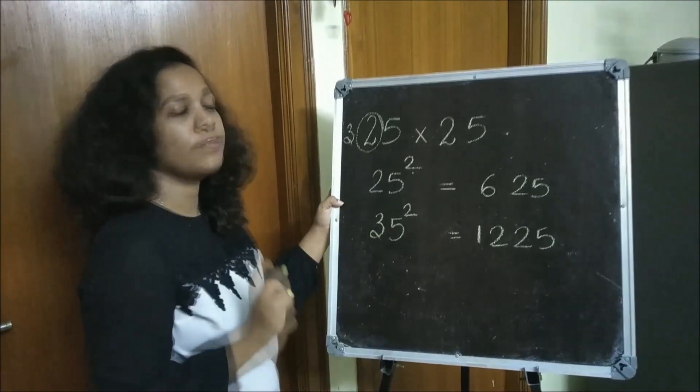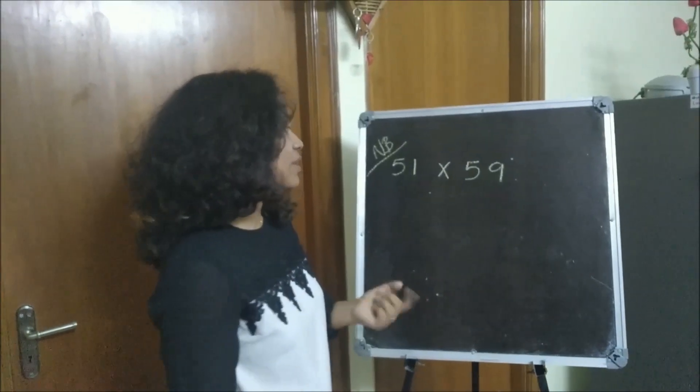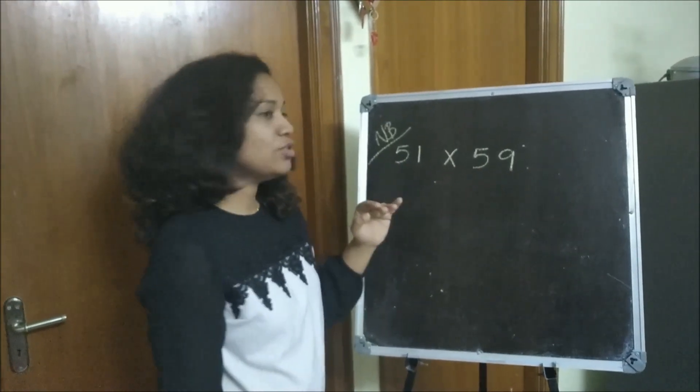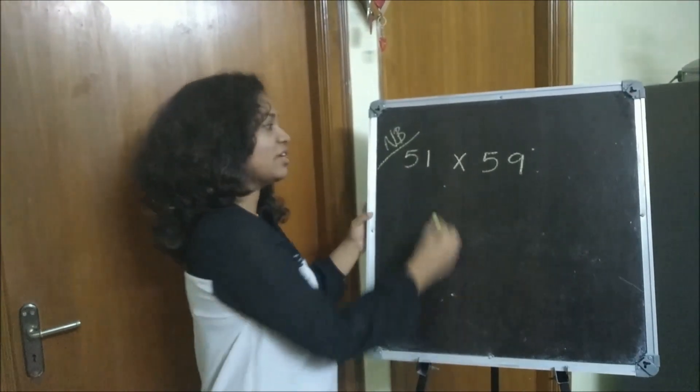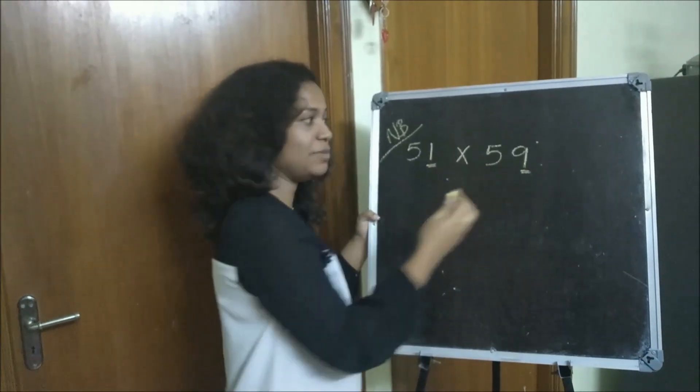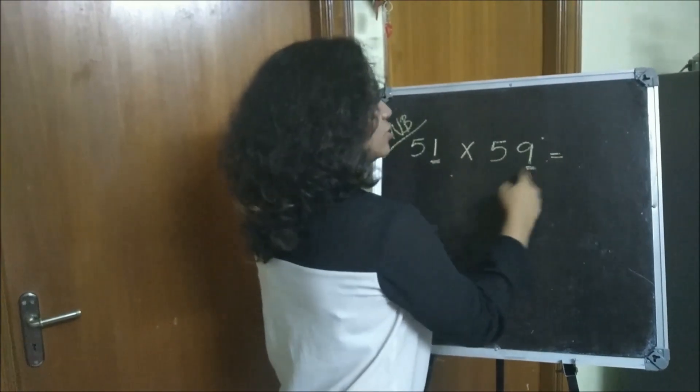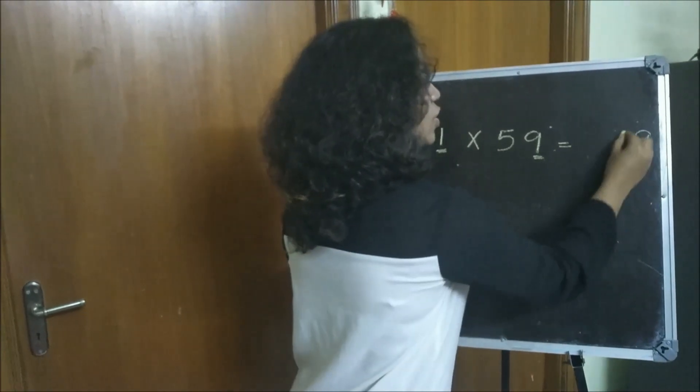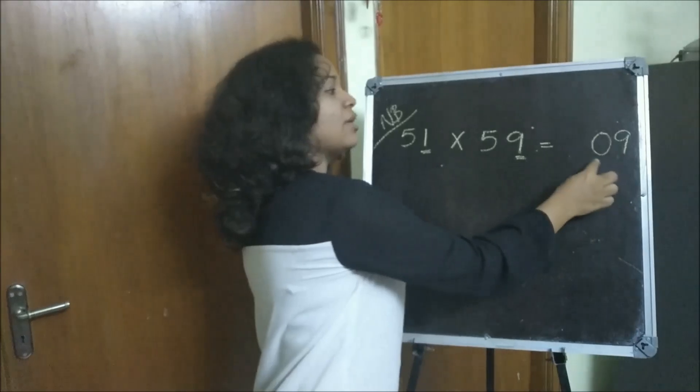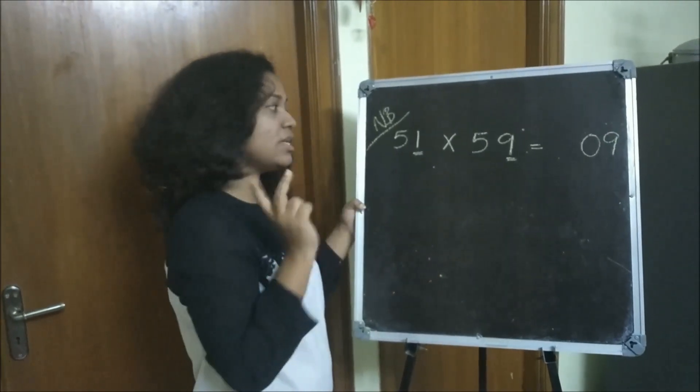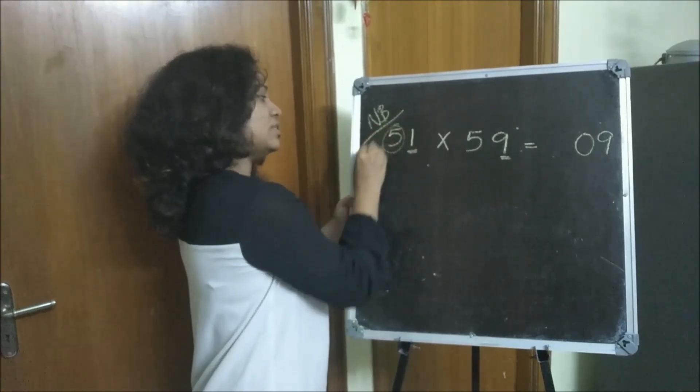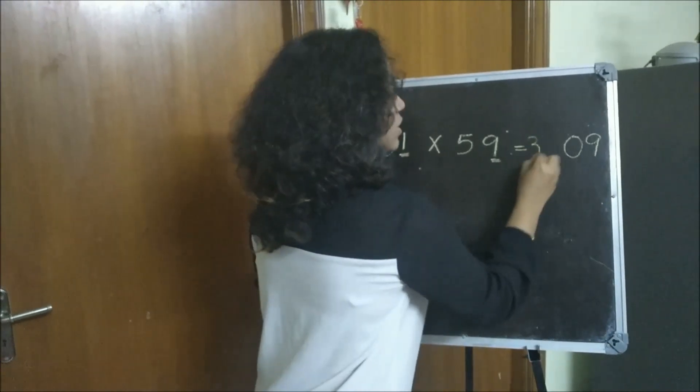Let's try to multiply 51 and 59. You should always keep in mind that if you have 1 and 9 here, when you multiply 1 into 9 is 9, you should always add a 0 in front of that 9. You should make it a two-digit number. And here 5 into 6 will get 30.